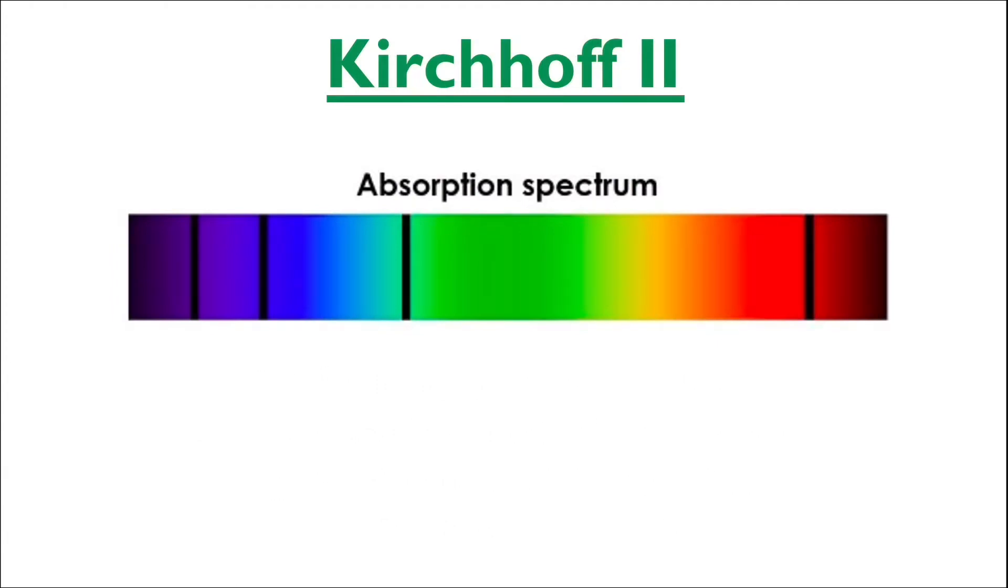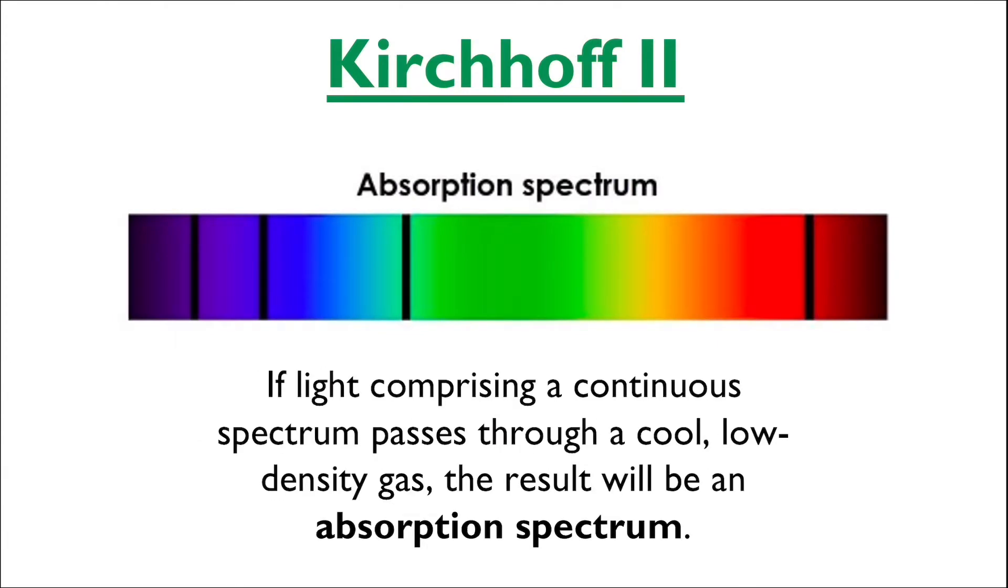In the second of these spectra, we have the same continuous spectrum as before, but now this light passes through a cool, low-density gas which absorbs a handful of the individual wavelengths, leaving these gaps in between. This type of spectrum is called an absorption spectrum.